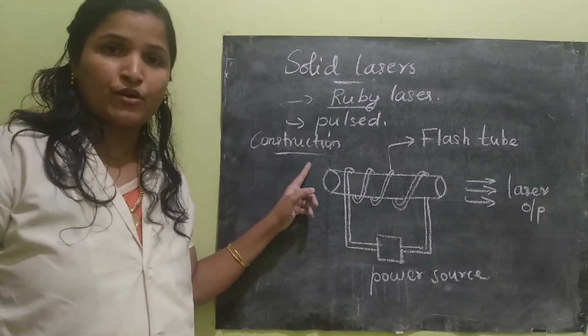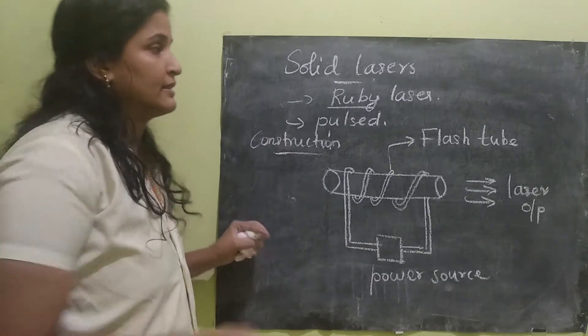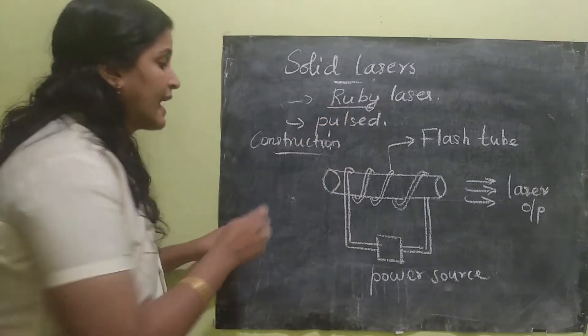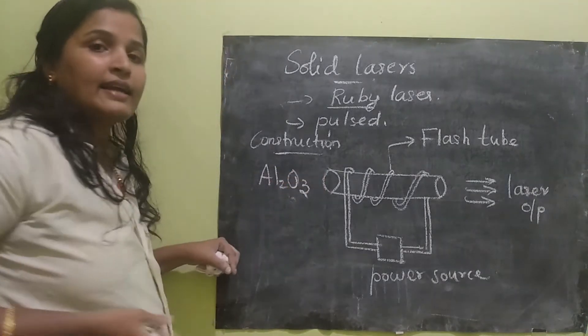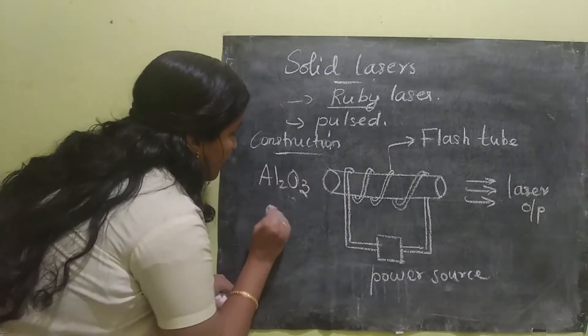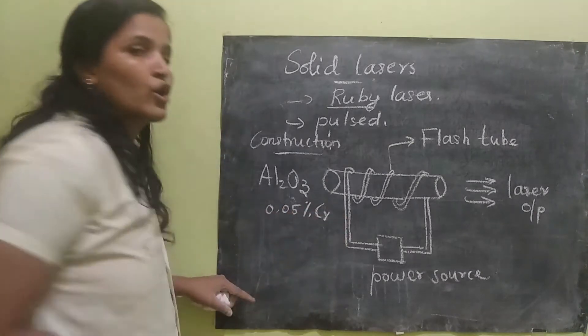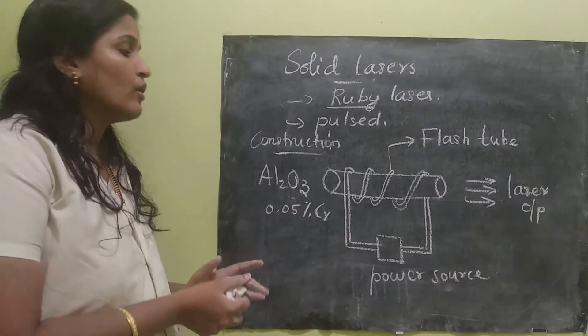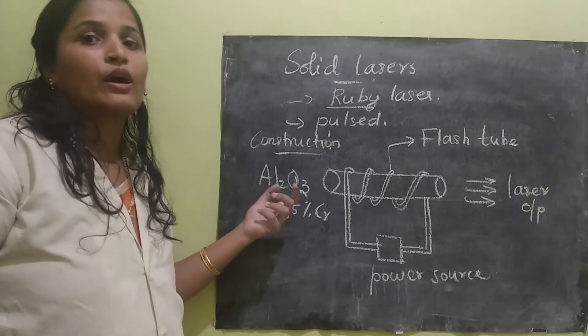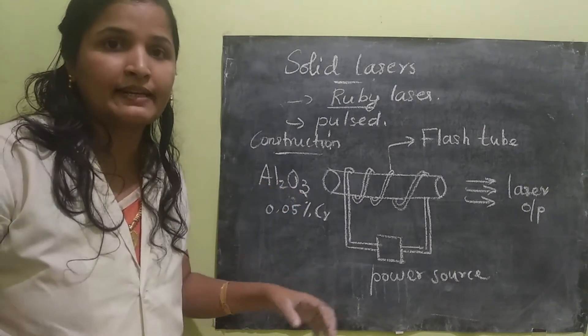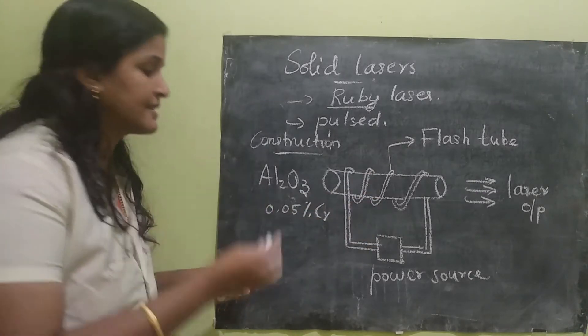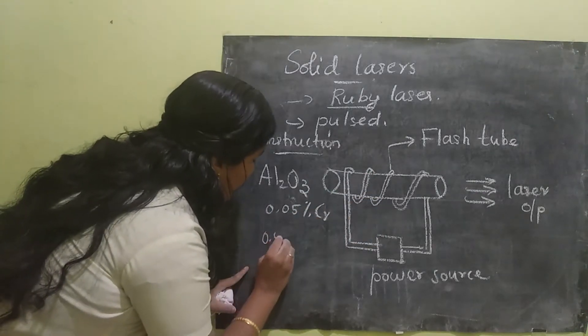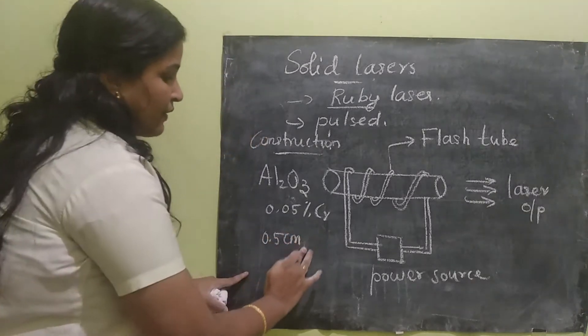Now let's see the construction of it. The ruby laser contains the active element of Al2O3 and it contains 0.05 percentage of chromium. This is formed into the shape of cylinder having the length of few centimeters and it is having a diameter of 0.5 centimeter.